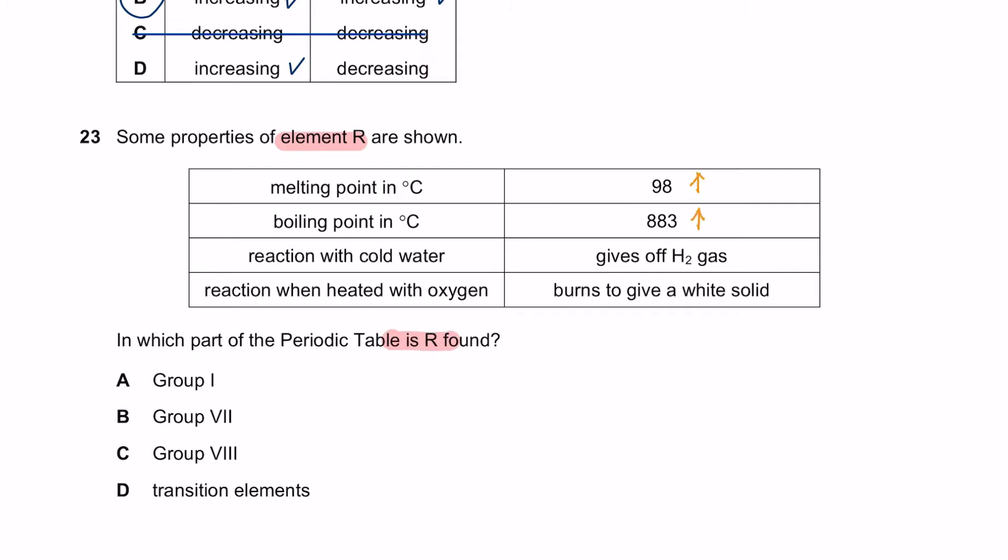It has a high melting point and boiling point. When reacted with cold water, it gives off hydrogen gas. When reacted with oxygen, it burns to give a white solid. The chemical property of group 1 says that it has high melting and boiling point and it can react with cold water to give hydrogen gas.